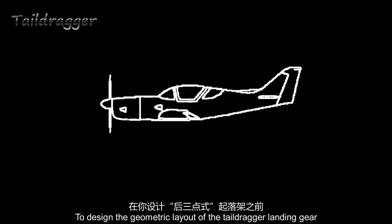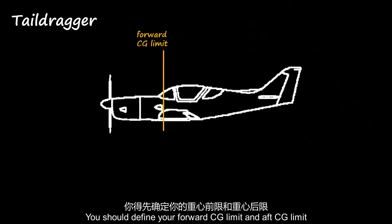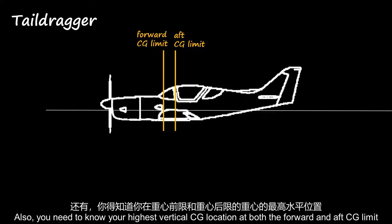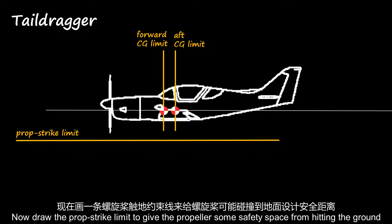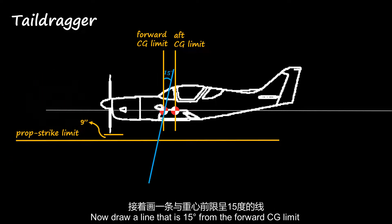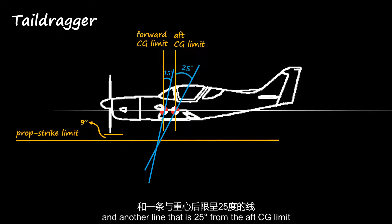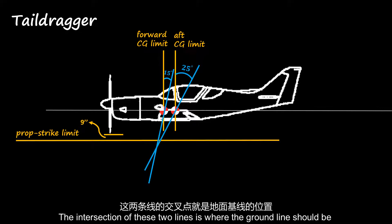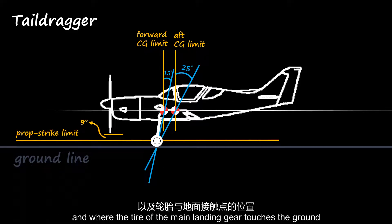To design the geometric layout of the tail dragger landing gear, define your forward CG limit and aft CG limit, and know your highest vertical CG location at both limits. Draw the prop strike limit — according to FAA 14 CFR 23.925A, the clearance for a tail dragger should be at least 9 inches. Now draw a line at 15 degrees from the forward CG limit and another at 25 degrees from the aft CG limit. The intersection of these two lines is where the ground line should be, and where the tire of the main landing gear touches the ground.